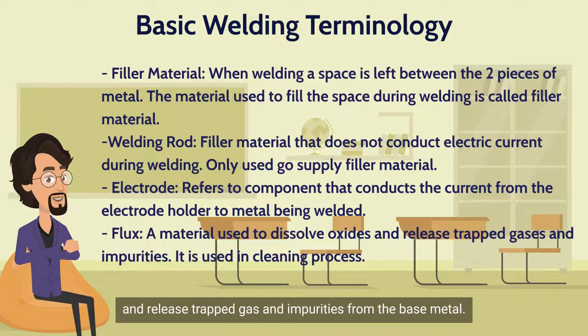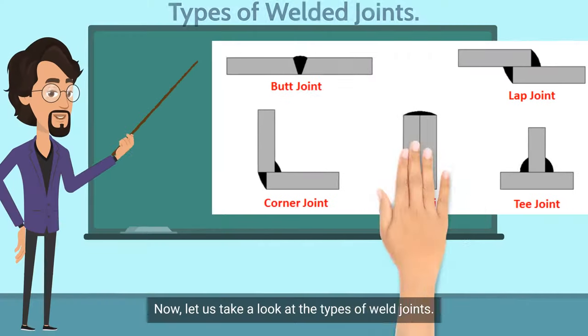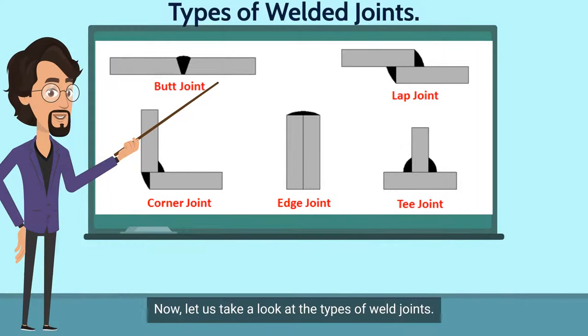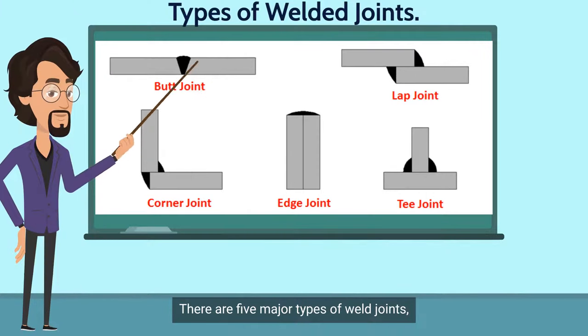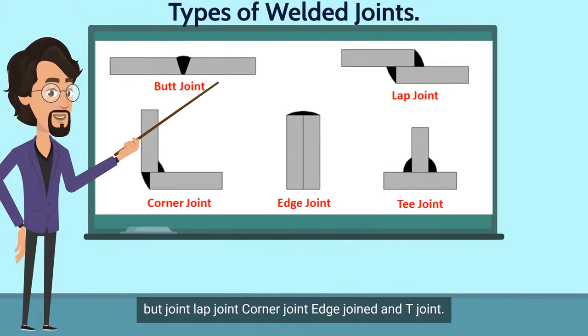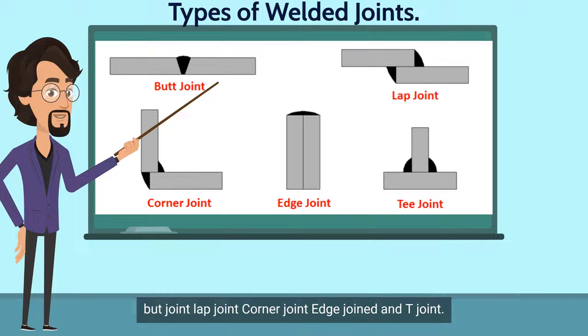Now let us take a look at the types of weld joints. There are five major types of weld joints: butt joint, lap joint, corner joint, edge joint, and T-joint.